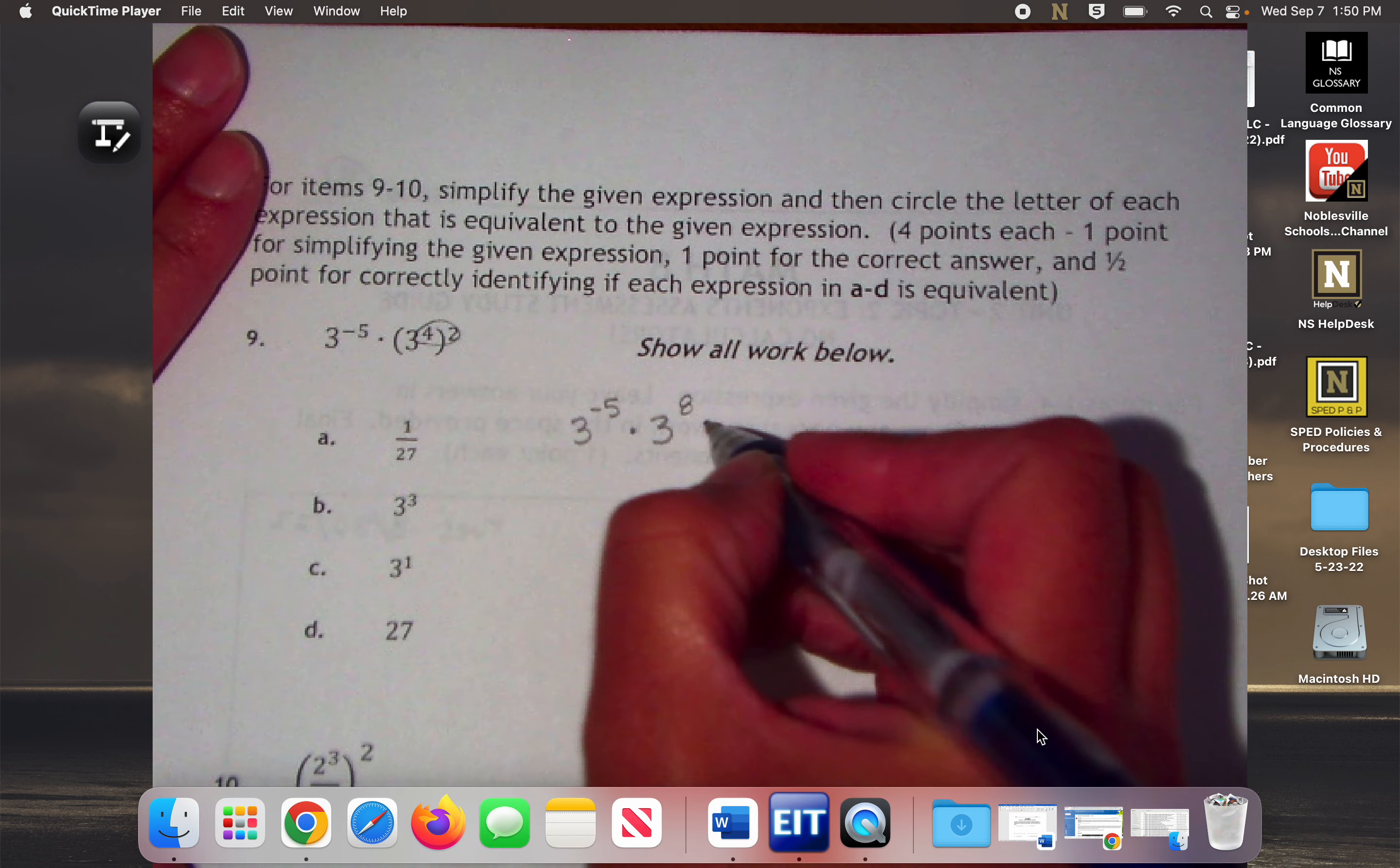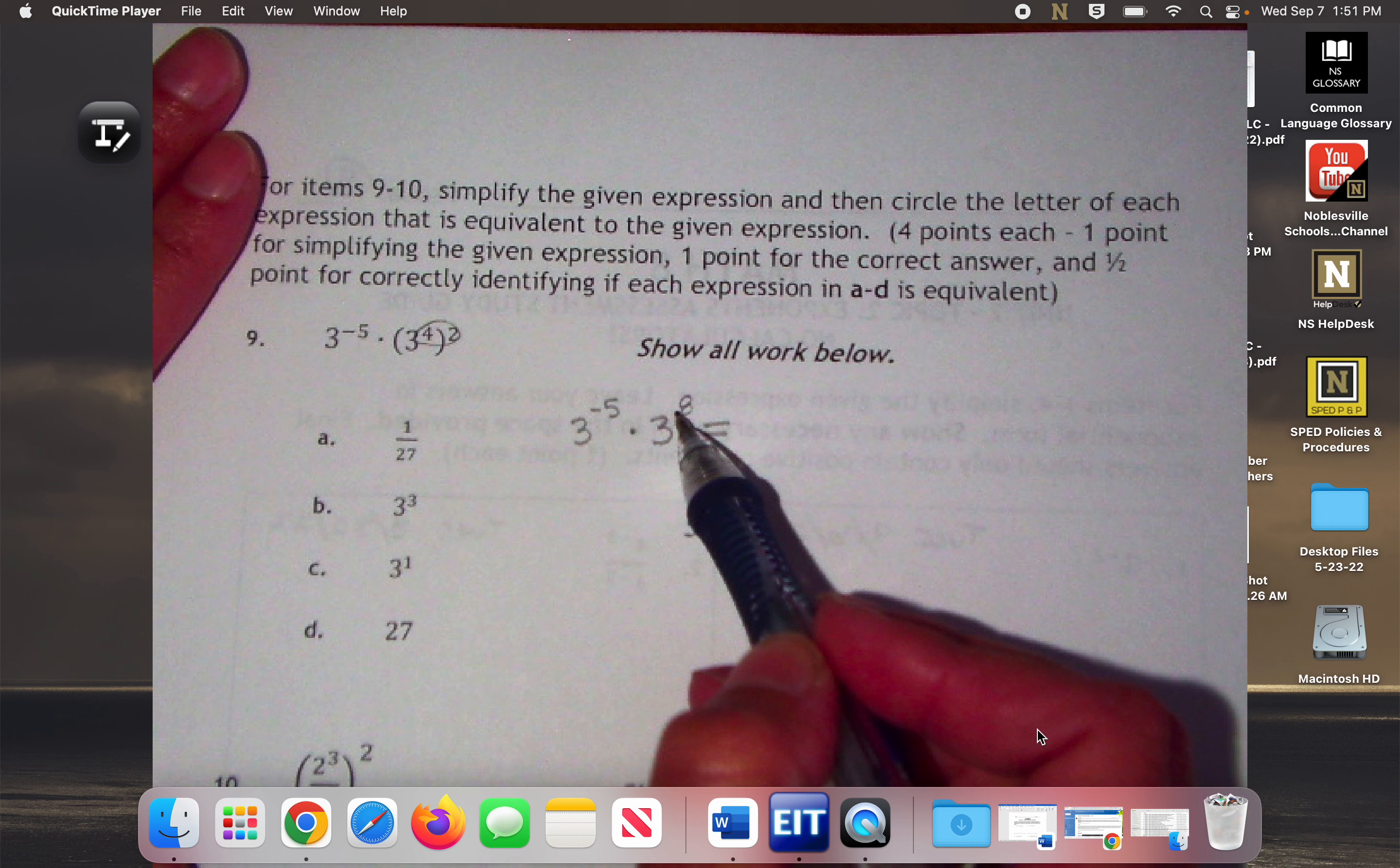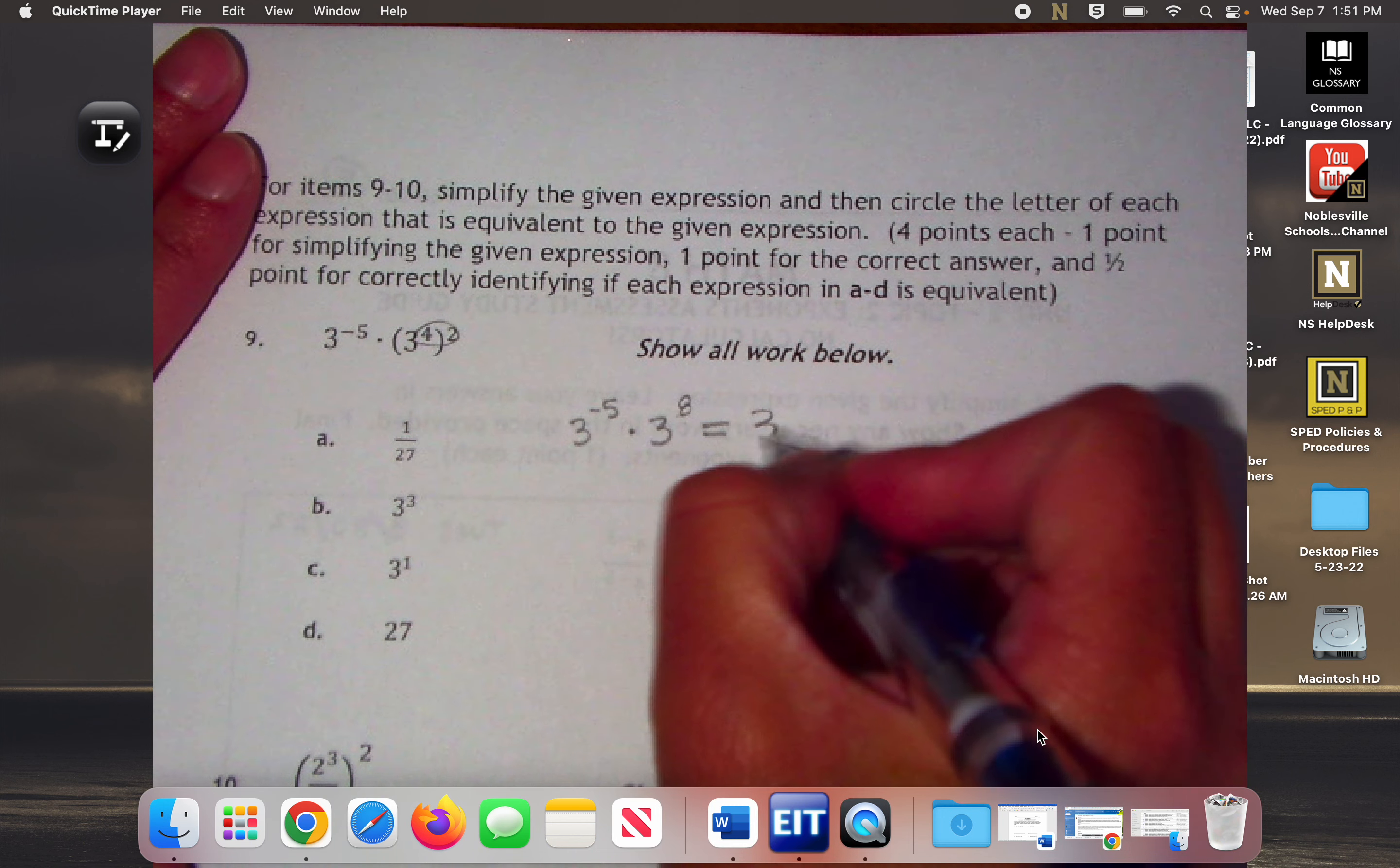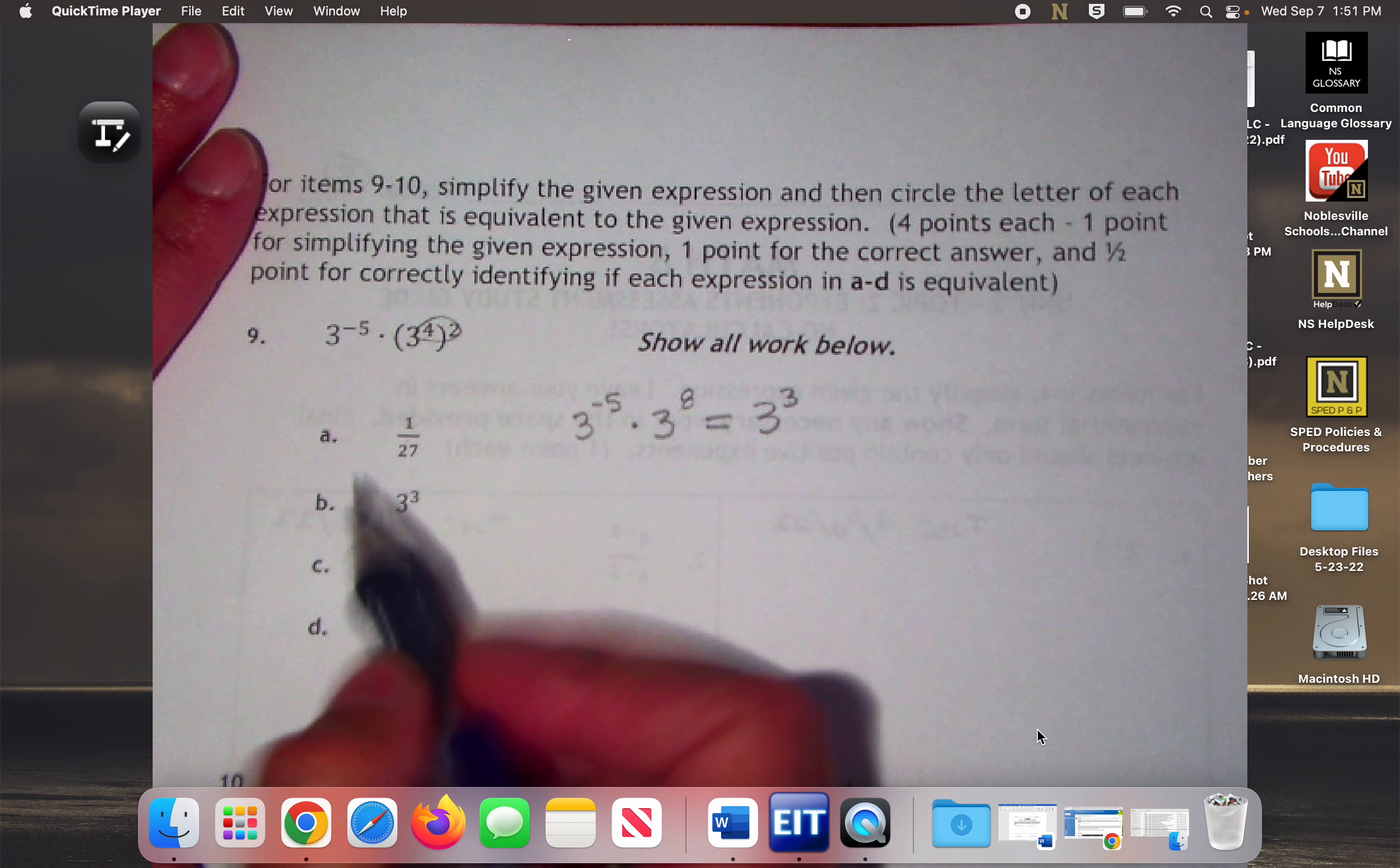So we're going to move on. What would I do now with this negative 5 and this 8? I'm going to add them. What is negative 5 plus 8? 3. 3 to the 3rd. Do you see 3 to the 3rd in any of these choices? So we're going to circle B. But we're not done yet. We're going to keep going.